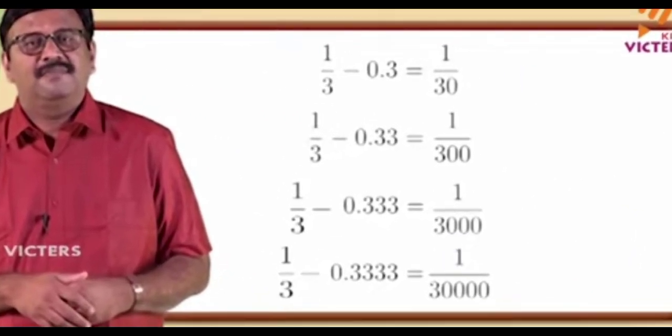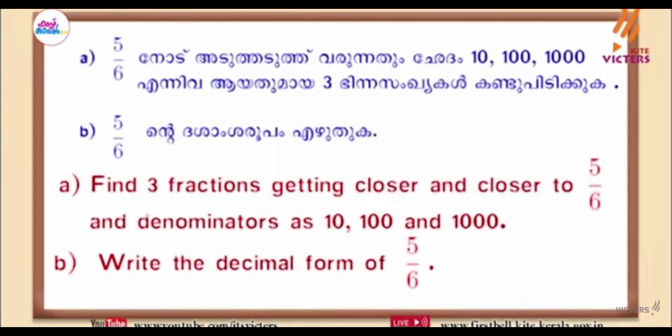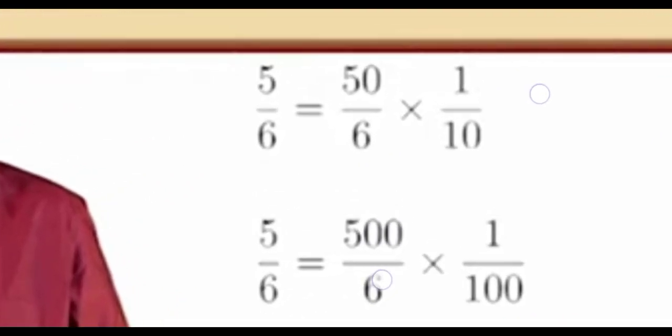1 by 3 is equal to 0.33333. So 2 by 3 is equal to 0.33333 multiplied accordingly.